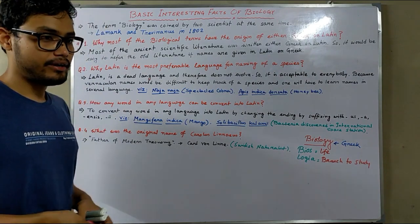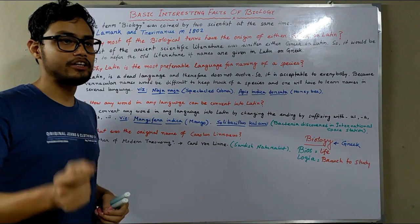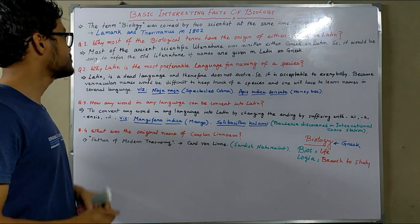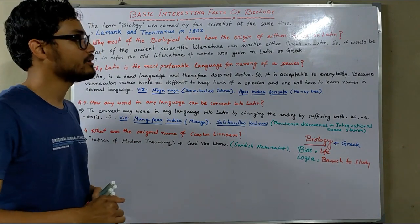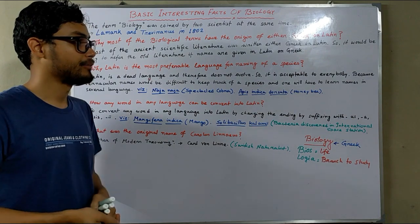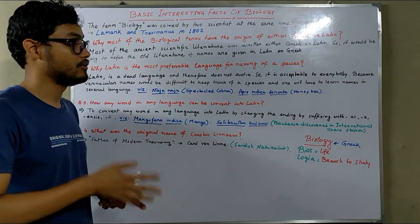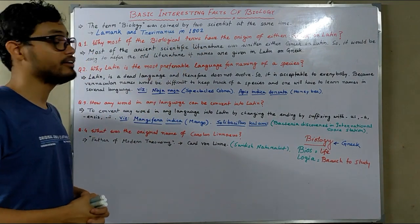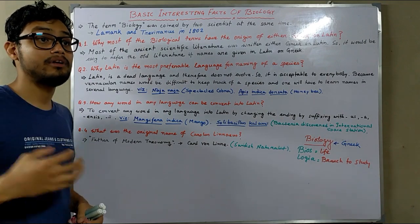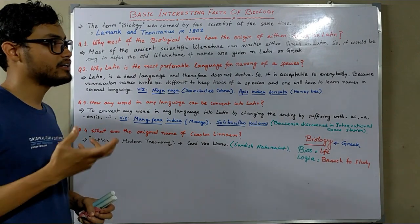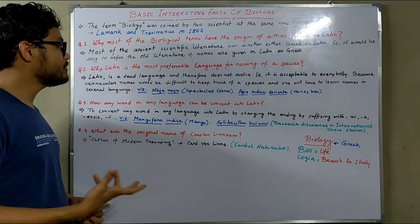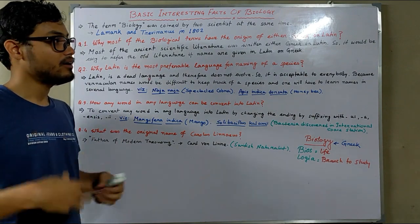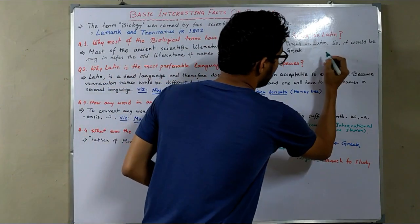When we read a particular topic, there are some terms that originate from either Greek or Latin. So our first question is: why do most biological terms have their origin from either Greek or Latin? Here's the answer — most ancient scientific journals, scientific literatures, and scientific discoveries were written in either Greek or Latin, so it is easy to refer to old literature in our modern discoveries.